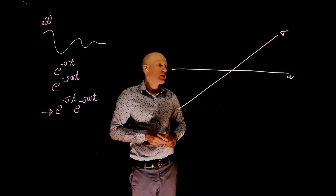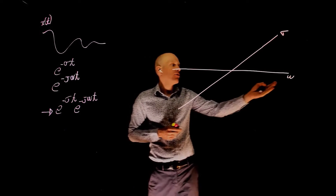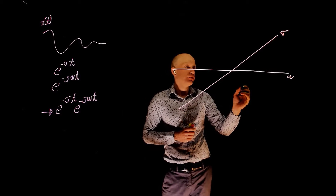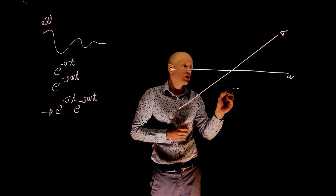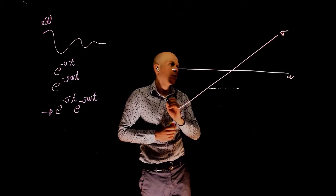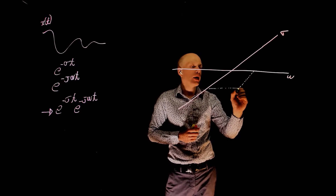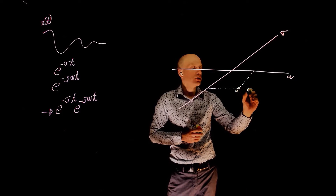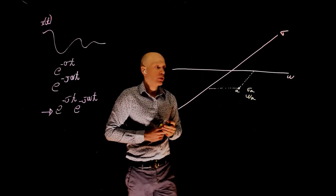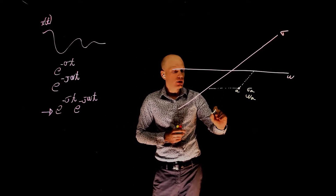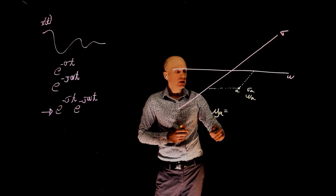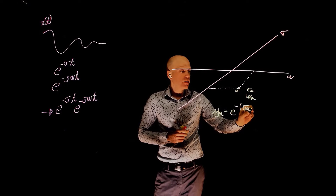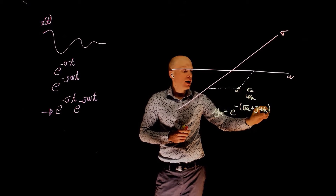To create a probing signal, let's pick a random point on this plane — where we have omega, the frequency, and sigma, the exponential component. Let's pick this point and call it point A. By picking point A, we are specifying sigma A and omega A. With that, we can create a signal yA, given by exponential of negative (sigma A plus j omega A) times t.